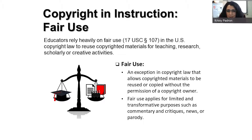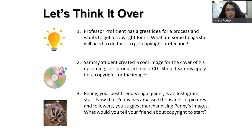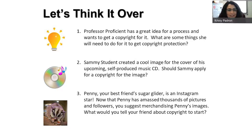Let's look at three scenarios. The first: Professor Proficient has a great idea for a process and wants to get a copyright for it. What will she need to do for it to get copyright protection? The answer: she would first have to write it down, document it somehow, or make it in a tangible form. Making it permanent is the very first thing she has to do for copyright protection.